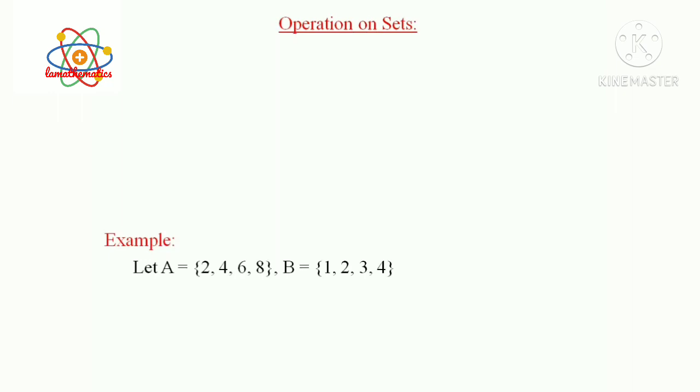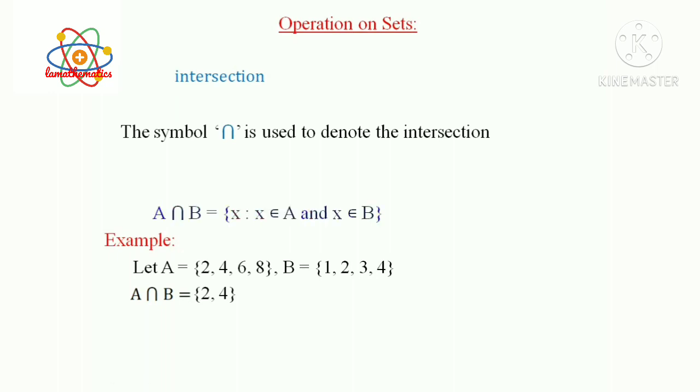We construct a set in such a way that the newly constructed set has elements in both Capital A and Capital B. It is clear that the new set is {2, 4}. Clearly, 2 ∈ A, 4 ∈ A. Also 2 ∈ B, 4 ∈ B. This operation is called Intersection. The symbol ∩ is used to denote the intersection. Hence we can write A ∩ B = {2, 4}. That is, A ∩ B is the set of all elements common to both Capital A and Capital B. In Set Builder form, A ∩ B = {x : x ∈ A and x ∈ B}.